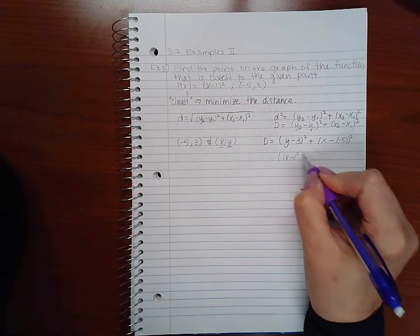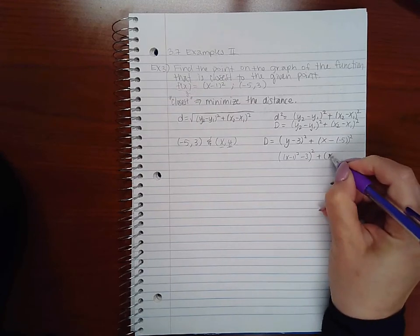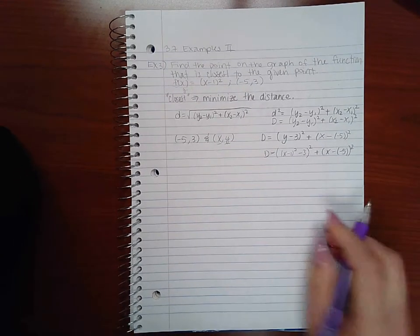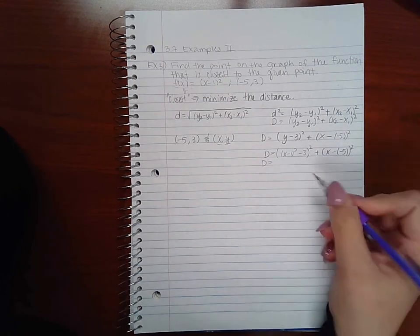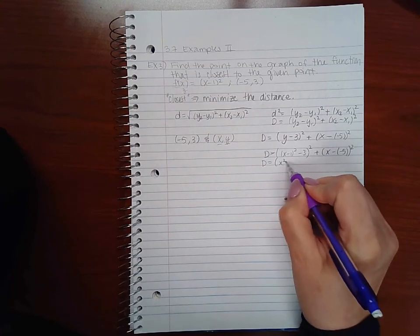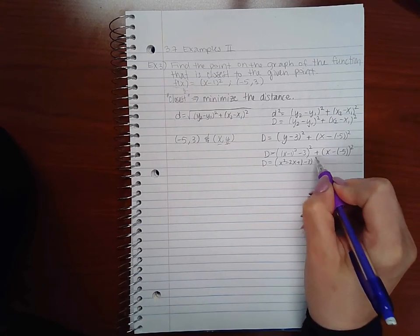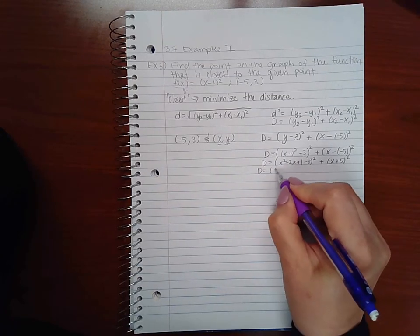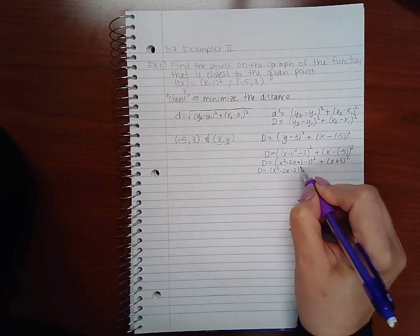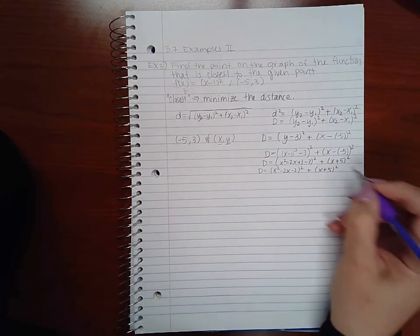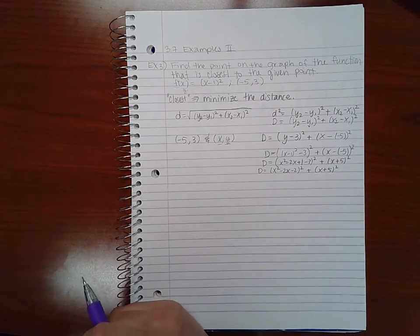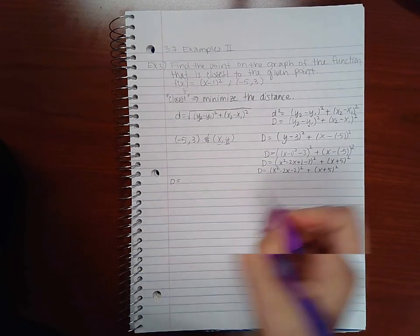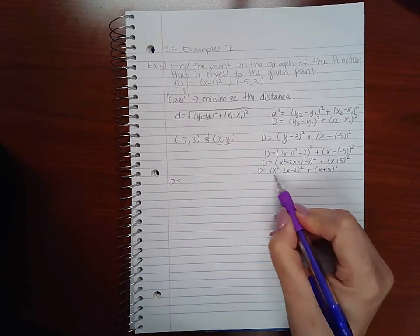So now I have my distance in one variable. Let's go ahead and multiply this out before we take the derivative. It'll be more complicated if we wait. In the inside here I have x squared minus 2x plus 1 minus 3, and in here I have (x plus 5) squared. If I simplify this, I will get (x squared minus 2x minus 2) squared and here (x plus 5) squared. I'm going to expand it out now.